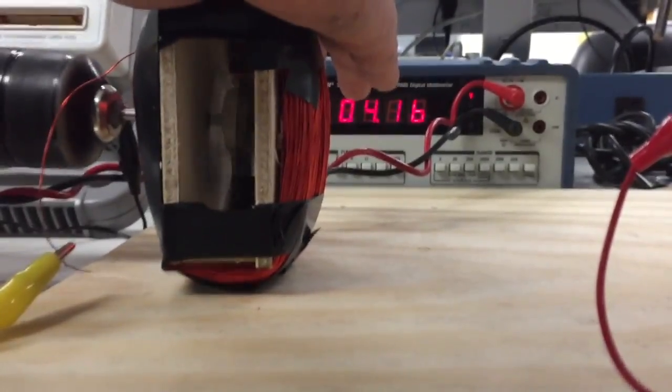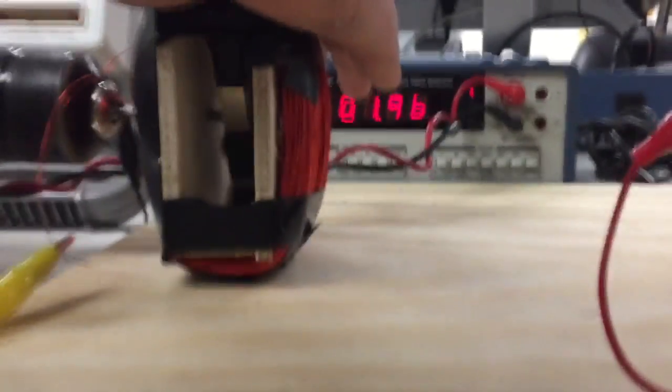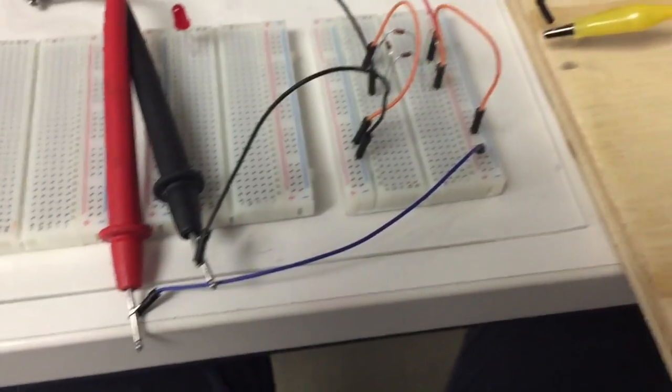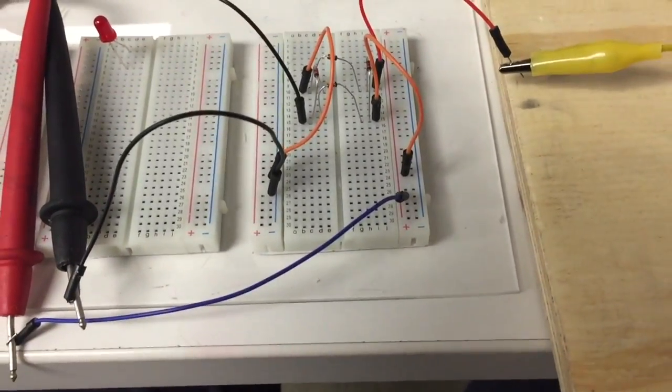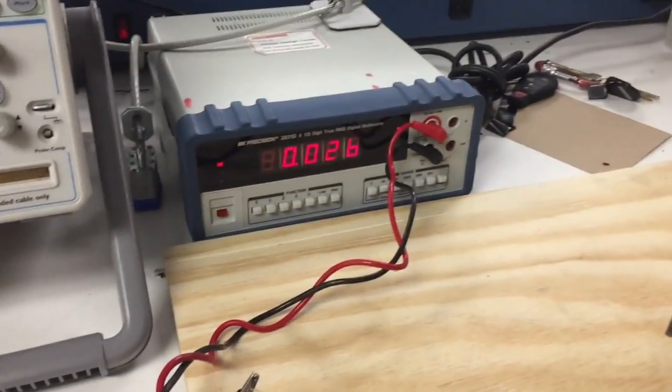Next we hook up the circuit to a full bridge rectifier so that we can read the DC values off the circuit. And what we're going to find is since the DC is not frequency dependent, we get really good readings and surprisingly very high voltage values that I wasn't really expecting.